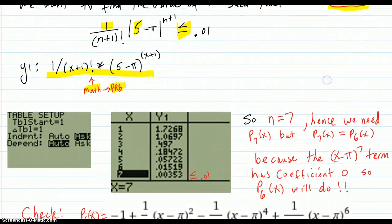So then you set your table to start at 1, delta table 1 and to ask. And you just put in n values until you reach a number which comes out at the value of this is less than or equal to 0.01 which is this one. So n equals 7.